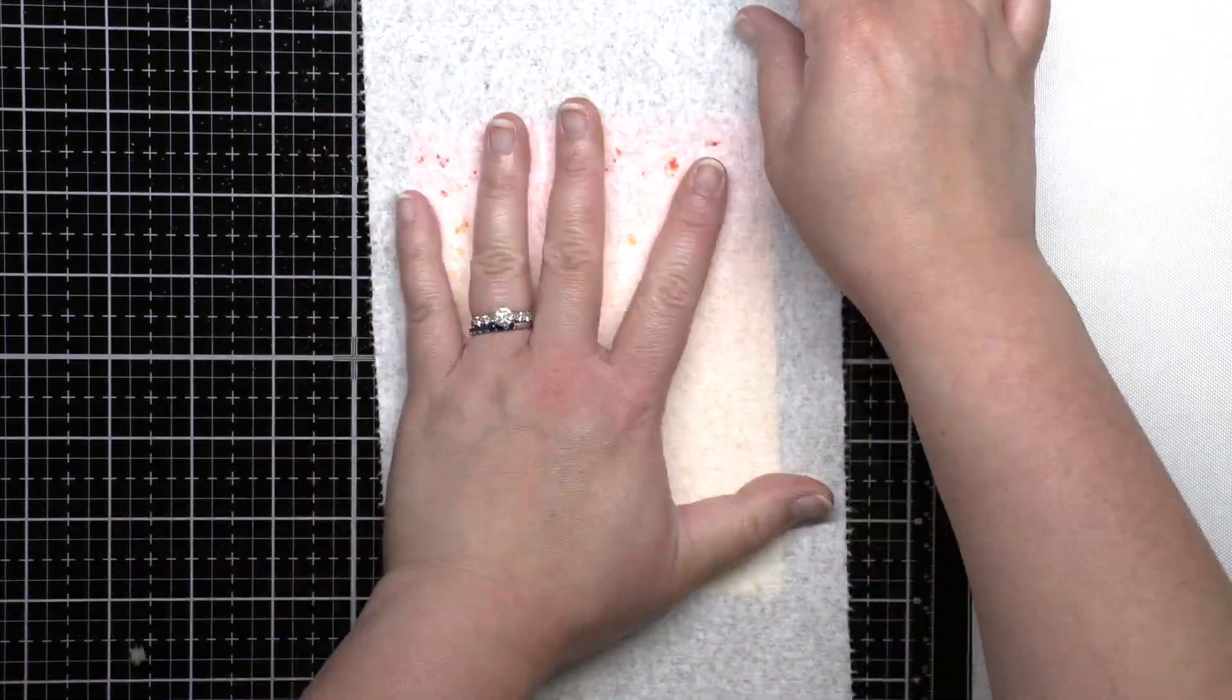Once they were dry, I splattered all the panels with water and blotted off the excess water to add lighter spots.